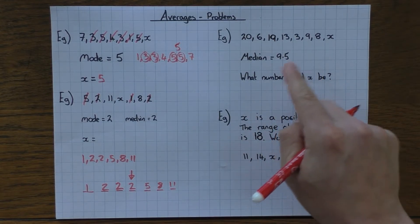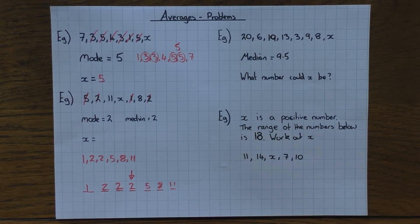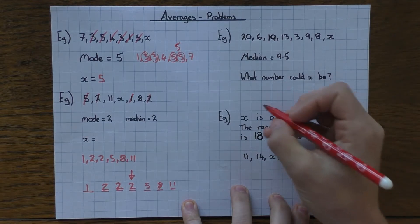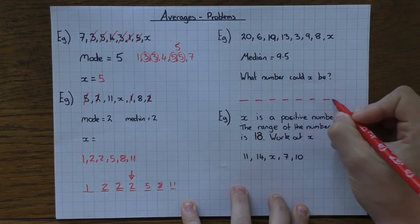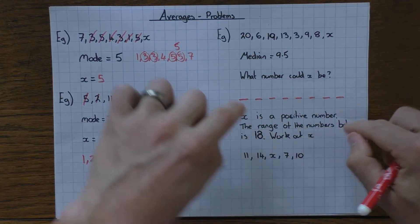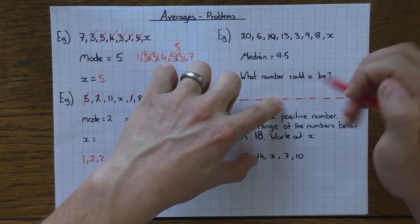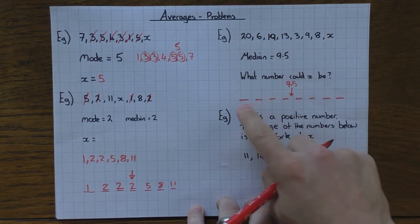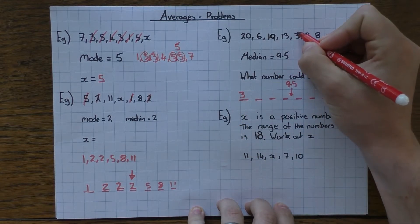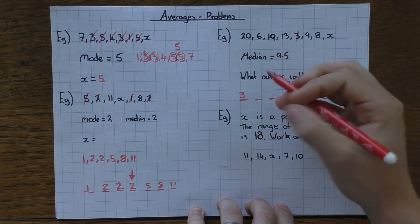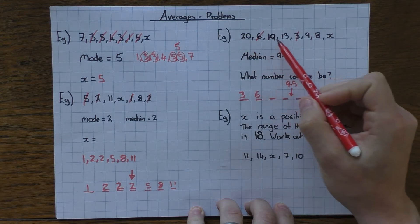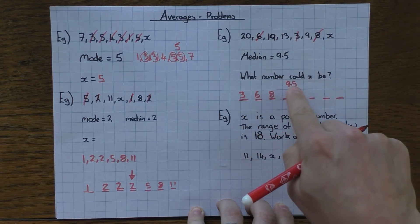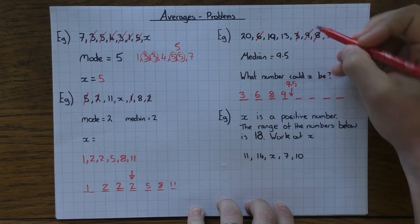This one is slightly trickier — we're told the median needs to be 9.5, a decimal to make things more interesting. We have 8 numbers total, so the median is the average of the 4th and 5th values. Let's put the numbers in order: the smallest is 3, then 6, then 8. The next number is 9, which is still below 9.5, so that's fine to place in position 4.